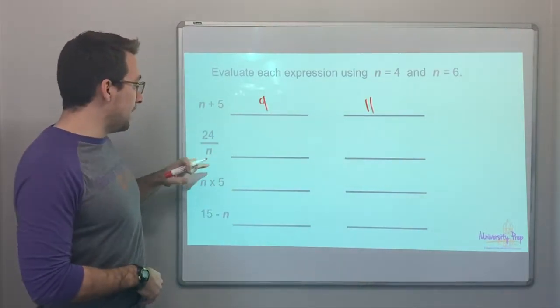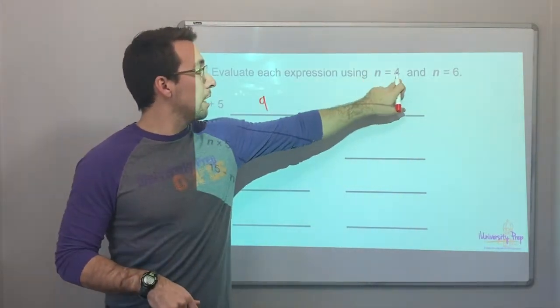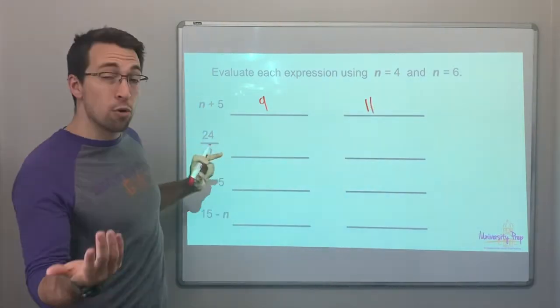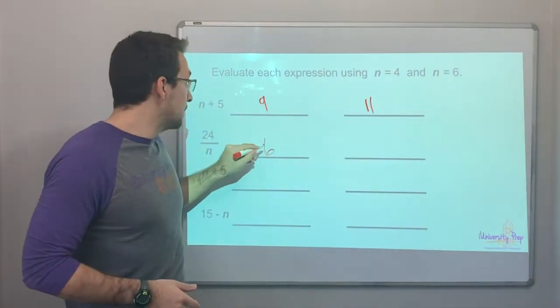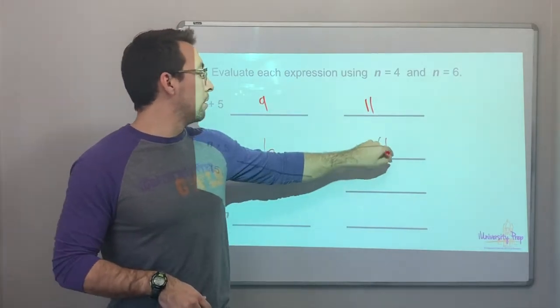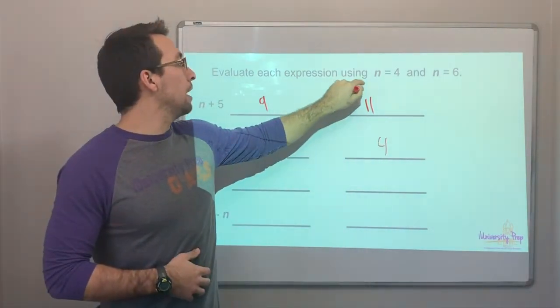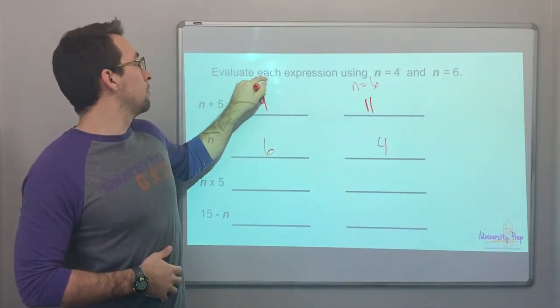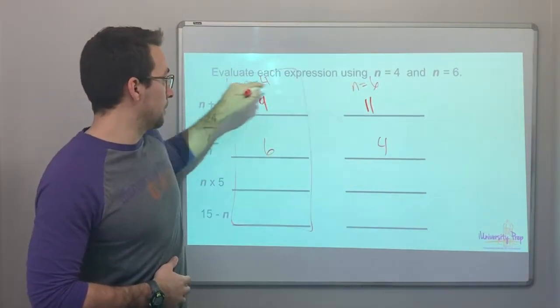Twenty-four divided by n. n is four. Twenty-four divided by four, six. What's twenty-four divided by six? That would be four. And so this is where n equals six, n equals four. These columns here.